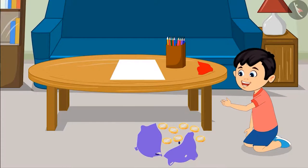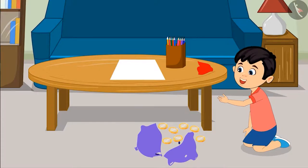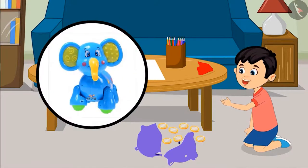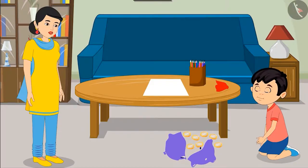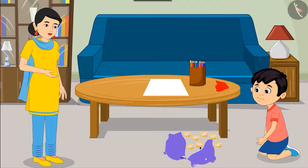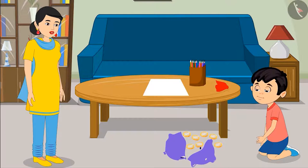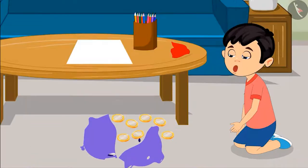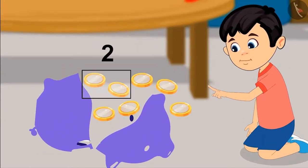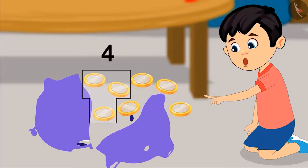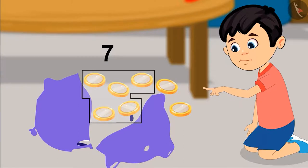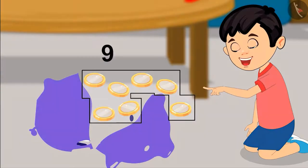Chotu says: 'Mom, so many coins! I will buy a new toy for myself with these!' His mother replies: 'Yes Chotu, but before buying a toy you should know how many coins there are. Can you count them and tell me?' Chotu counts: 'Yes mom — one, two, three, four, five, six, seven, eight, and nine. That means there are nine coins.'